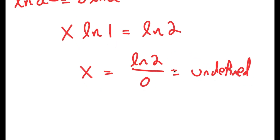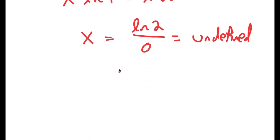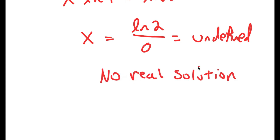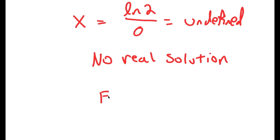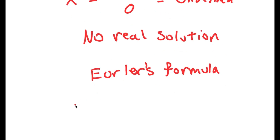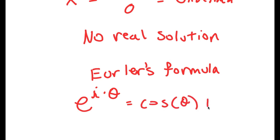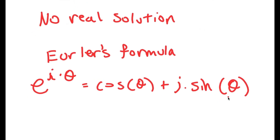We know that this equation has no real solution, but it could still have imaginary solutions. To actually solve this, I'm going to use something known as Euler's formula. Basically, what this formula is: if I have something in the form e to the power of i times theta, this is equal to cosine of theta plus i times sine of theta. I know to many of you watching this video this may just sound like a bunch of gibberish, but just hang on.